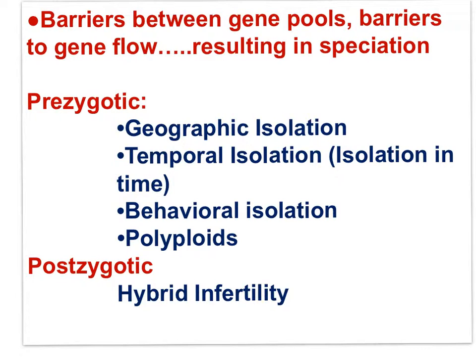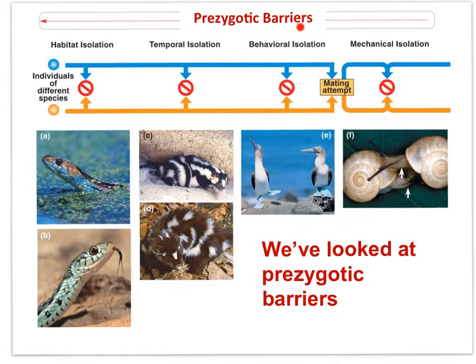With the few remaining slides, I would like to approach the concept of barriers to gene flow from another angle. Barriers that prevent the formation of a zygote — pre-sex — are called pre-zygotic barriers. Geographic isolation, temporal isolation, behavioral isolation, and polyploidy would all be pre-zygotic barriers. A post-zygotic barrier, important in the formation of different species, would be the infertility of the hybrid offspring.